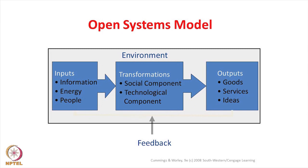The metaphor we are using in this course is organization as an open system. Any system will have certain inputs, a transformation process, and output. Organization as an open system has inputs like information, energy, and people. Business is nothing but transforming inputs through social and technological components, which results in goods, services, or ideas. All three components keep giving feedback to each other.